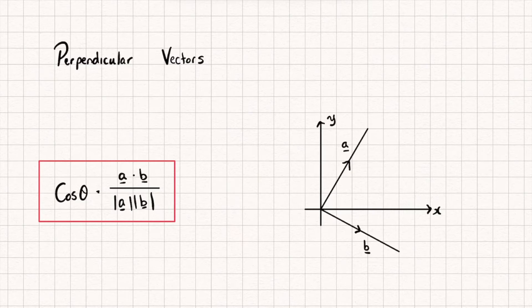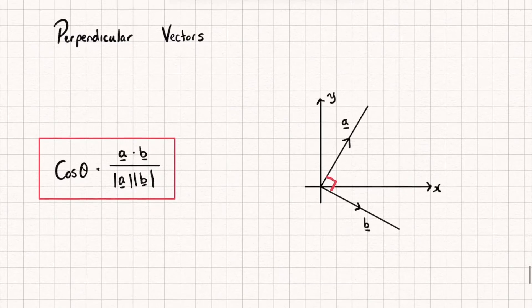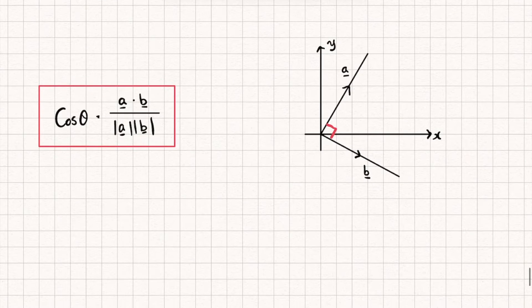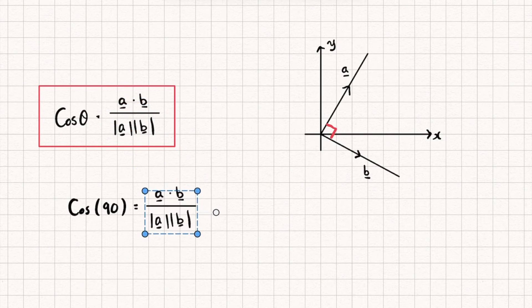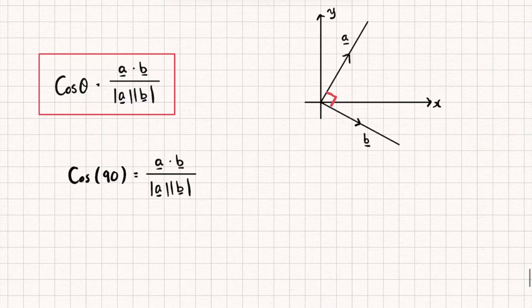Now let's think about when this angle is 90 degrees, so our vectors a and b are perpendicular to each other. I'll draw that on there, these two vectors are at 90 degrees. Well, we have that angle theta is equal to 90, so we have cosine of 90 is equal to a dot b divided by magnitude of a multiplied by the magnitude of b.